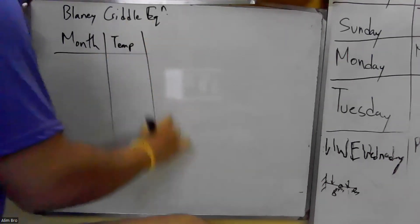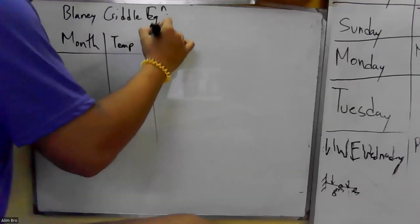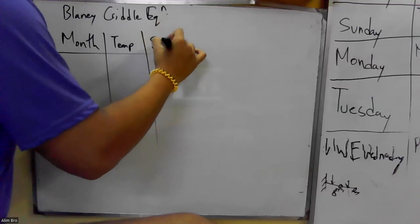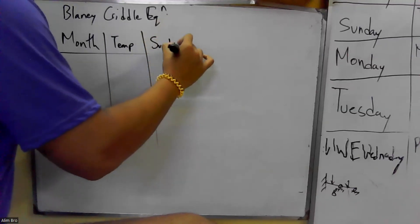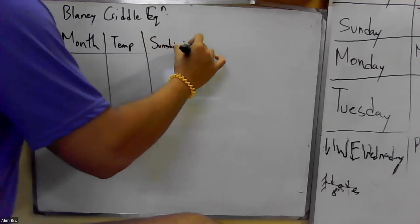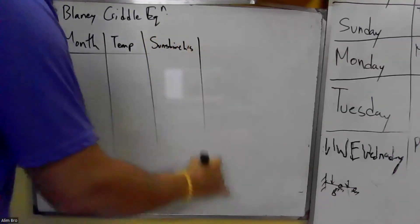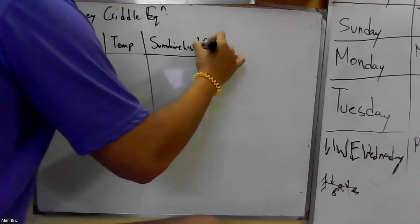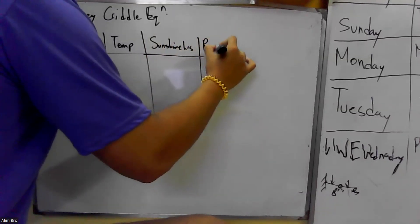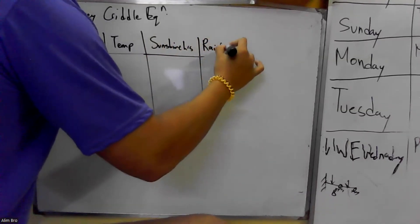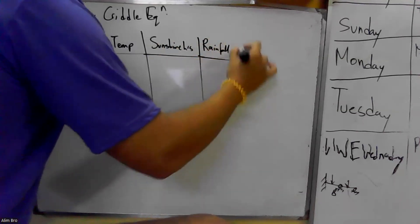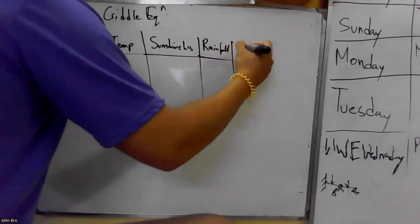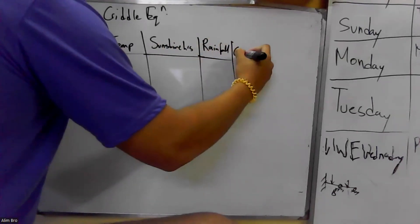The parameters required for the Blaney-Criddle equation are: temperature, sunshine hours, rainfall, and crop factor.